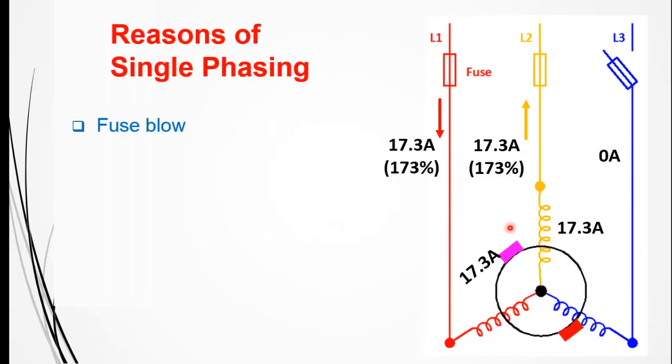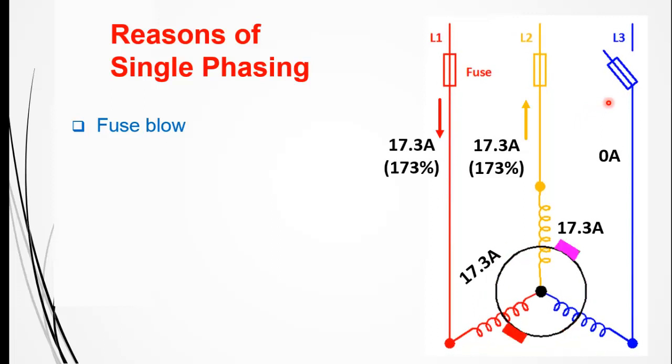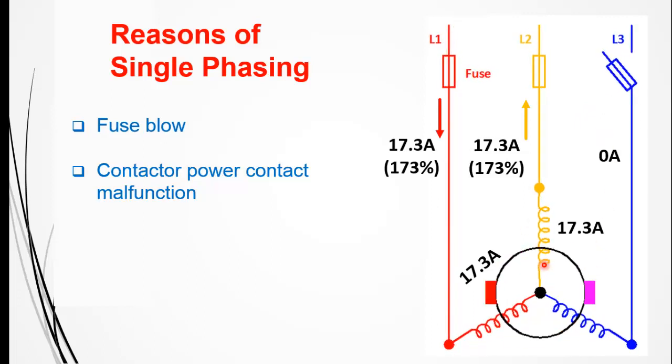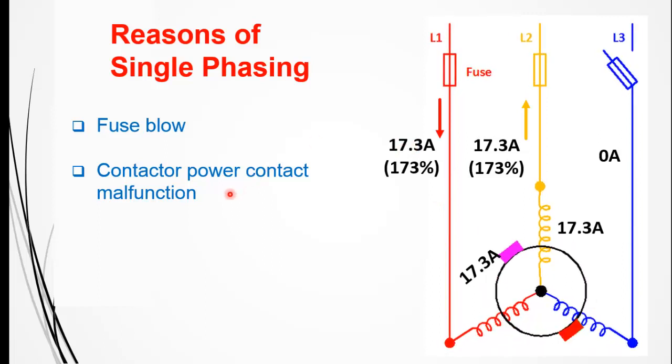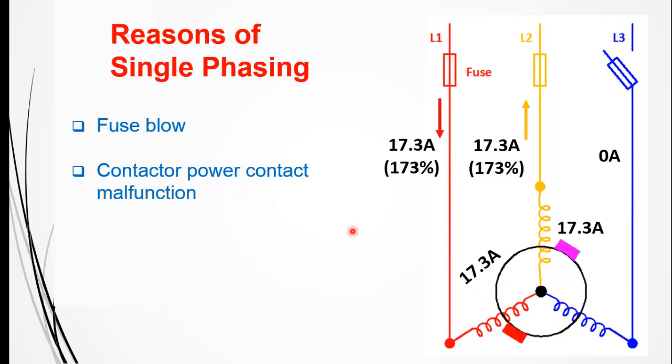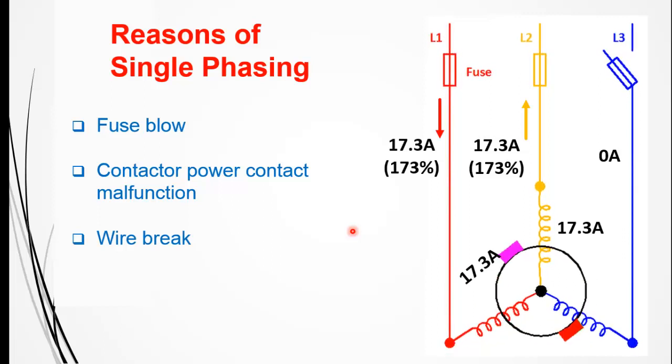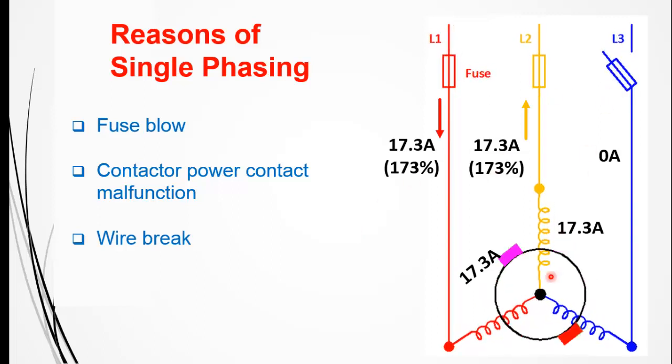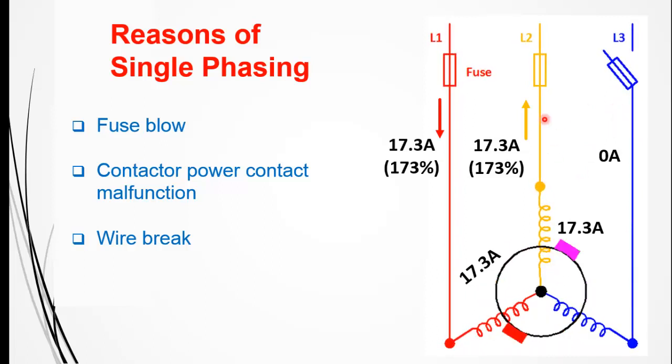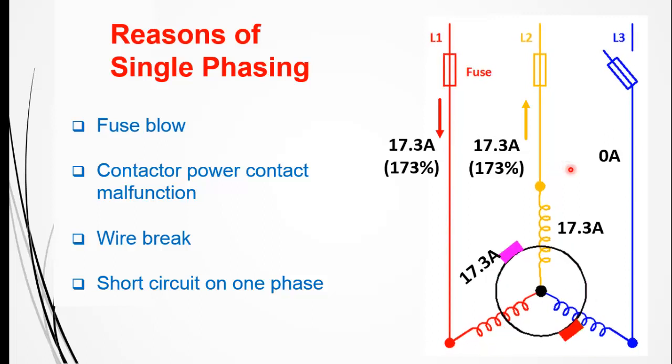Now let's talk about the reasons for single phasing. First, if one of the three fuses blows, it will cause single phasing on the three-phase motor. Another reason is if one pole in a three-pole contactor is damaged, which may also cause a single phasing problem. Also, a wire break from the feeder to the motor or from the grid to the distribution center. And finally, if a short circuit happens and it is not bolted, it will open one phase and cause single phasing.